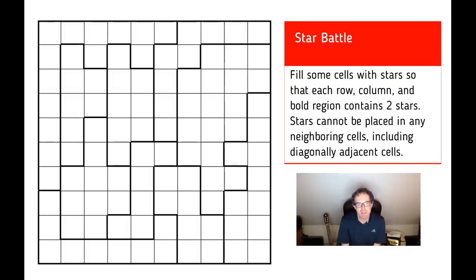And in this puzzle, what we need to do is to place two stars in every row and every column and every irregularly shaped box. And there's only one other rule. The rules are very, very simple.